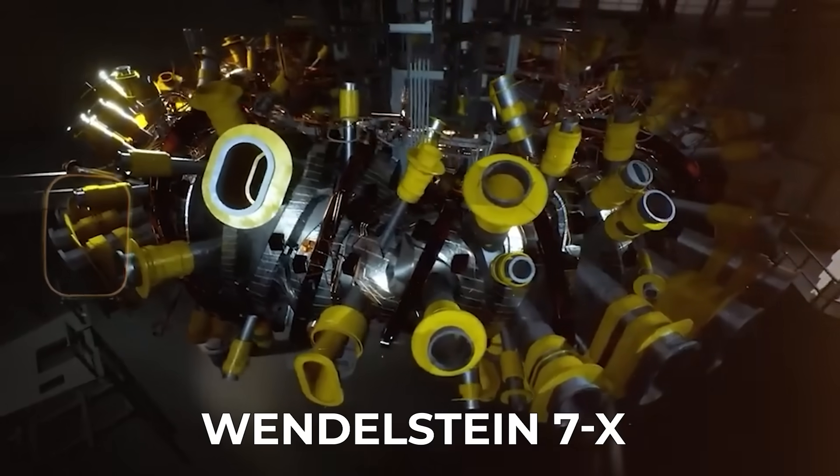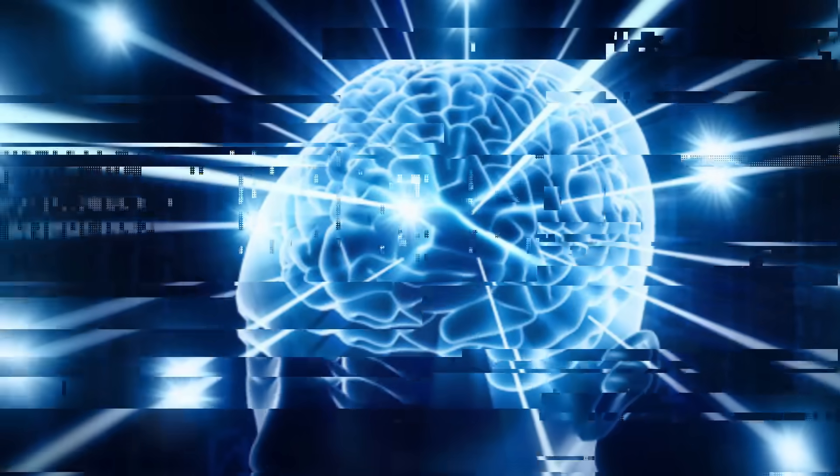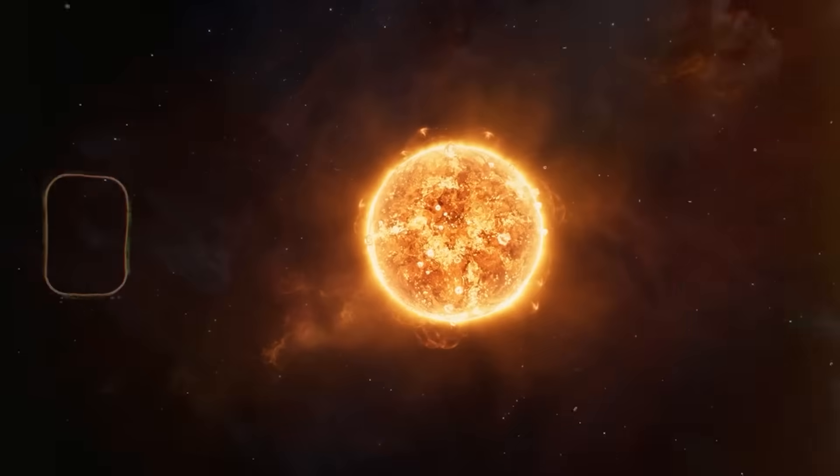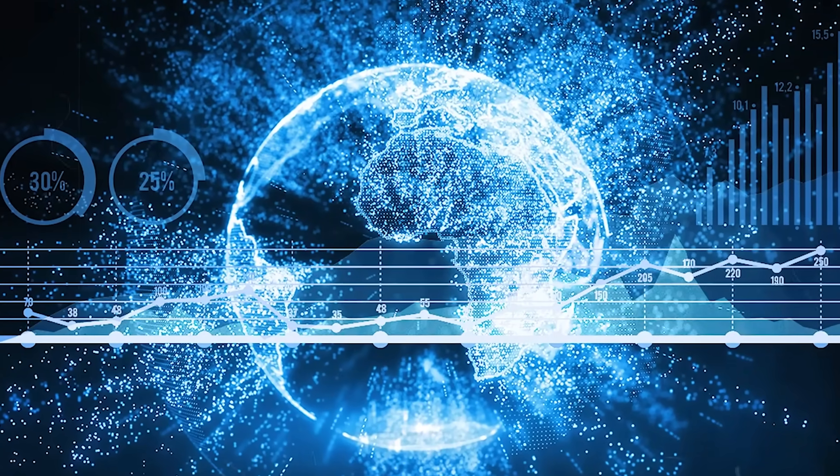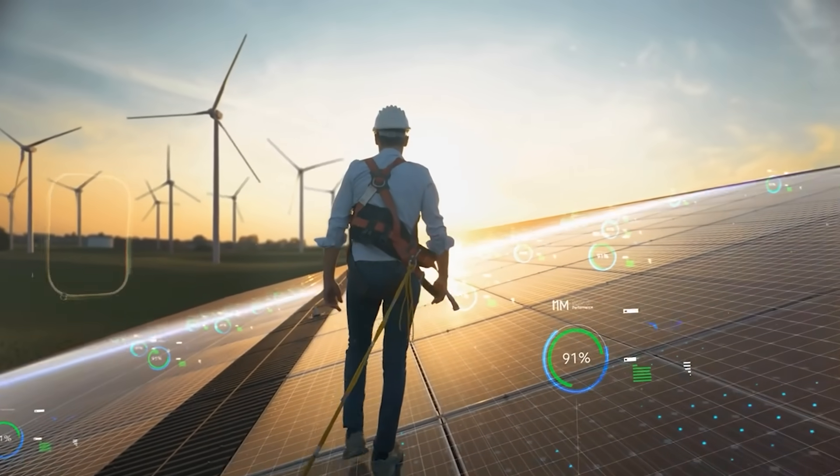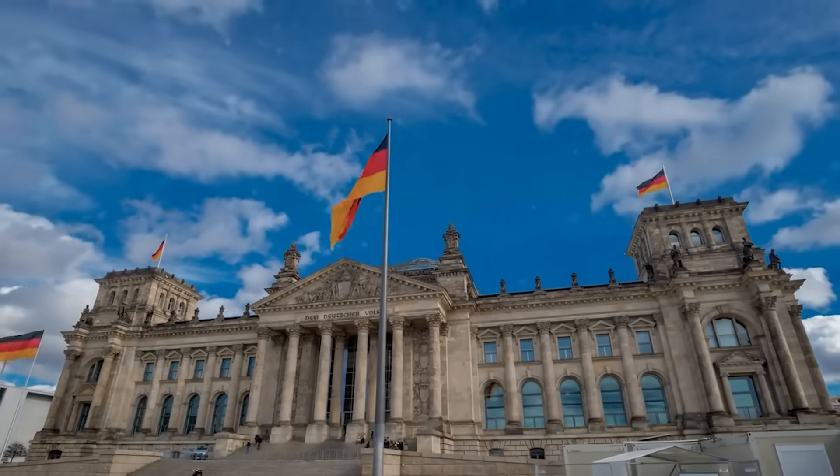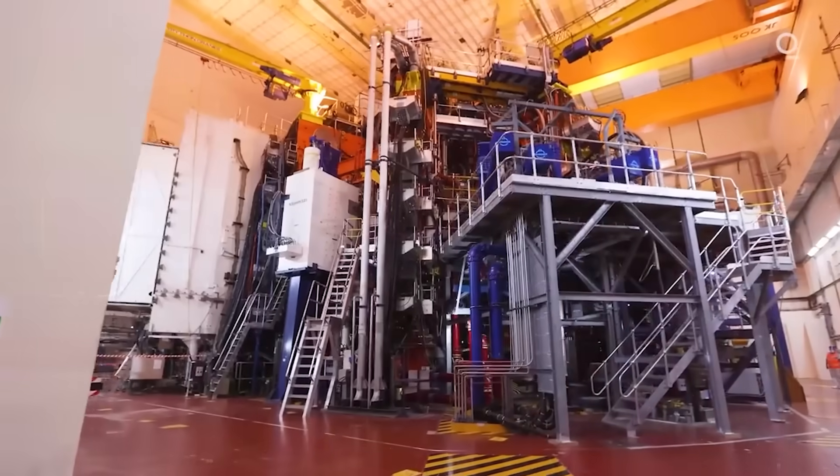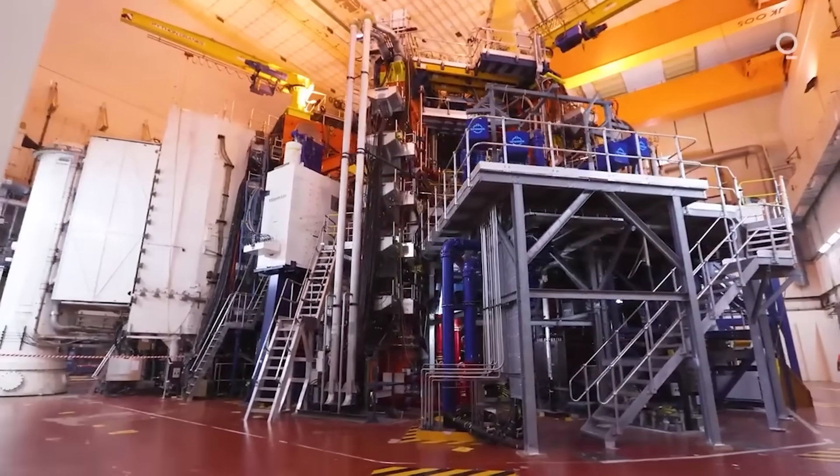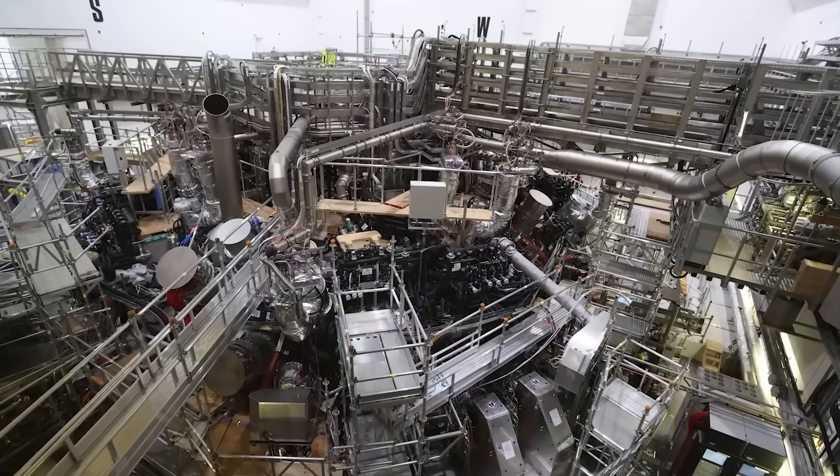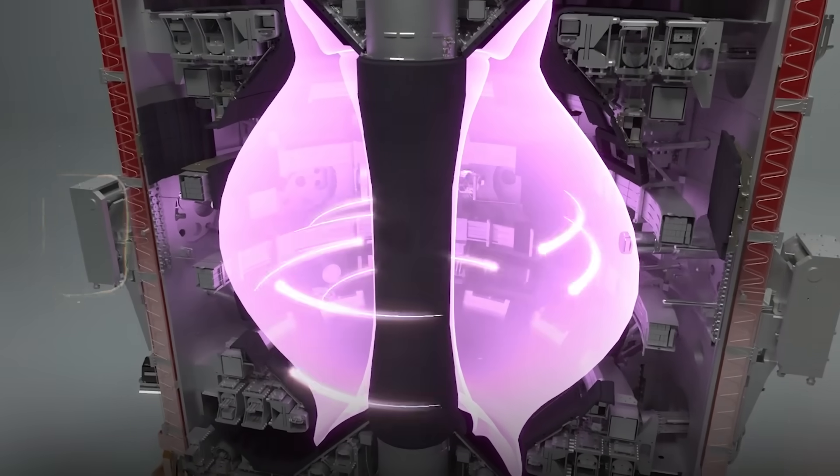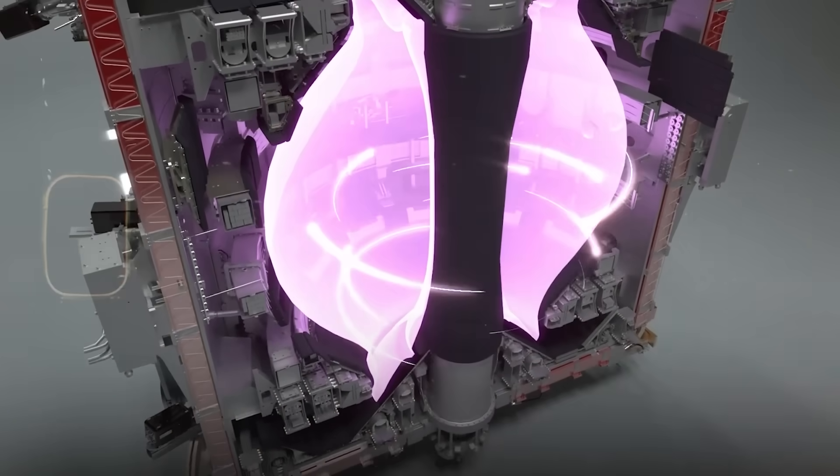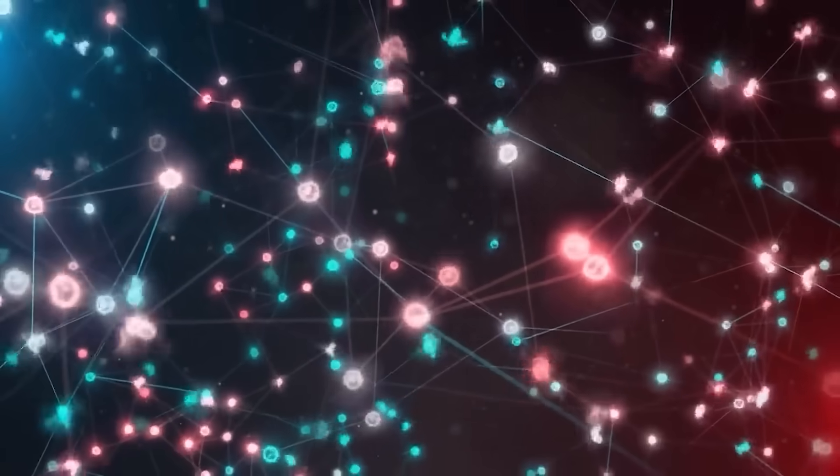In the end, the Wendelstein 7X is more than a machine. It's proof that human ingenuity can reach the heart of the sun. It's the spark that could light a global transformation. In a world desperate for clean power and a stable climate, Germany didn't just dream of the future. They built it. Quietly. Precisely. Beautifully. The rest of us are finally catching up. This isn't science fiction anymore. The Wendelstein 7X has changed the game. And somewhere inside that twisted sculpture of steel and plasma, the future is already burning bright.